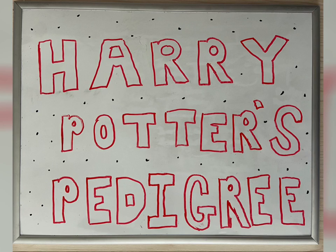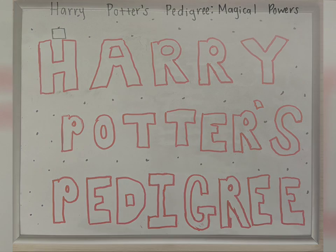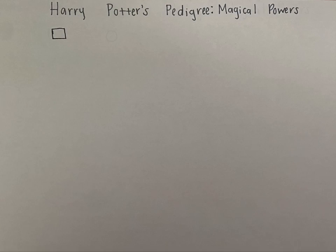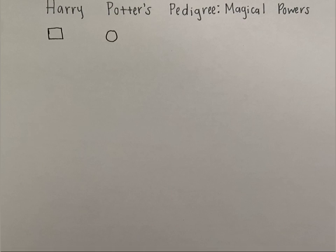Hello. Today we are covering the genetic pedigree of one of my favorite fictional characters, Harry Potter. We will be tracing how magical powers have passed through his lineage. First, I will construct a pedigree showing four generations of Potters and related family members. Males are designated with a square and females with a circle. Individuals that have magical powers will have their pedigree symbol shaded in.